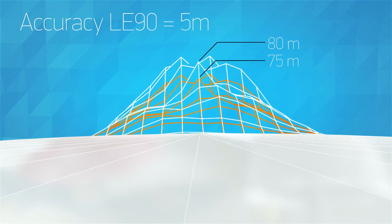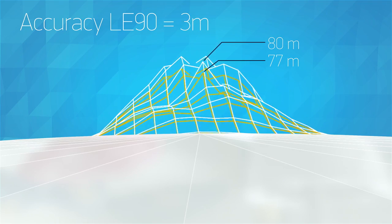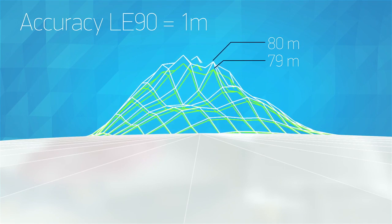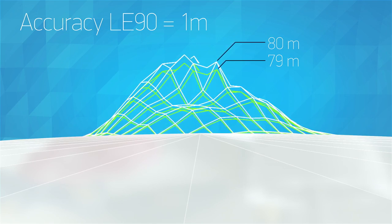Accuracy refers to how closely the heights in the model match the actual ground heights that you're measuring. Accuracy is independent from posting, but generally, the tighter the posting, the better the accuracy.